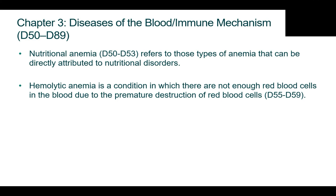First, let's look at anemia. Anemia is a condition that develops when your blood lacks enough healthy red blood cells. These cells are the main transporters of oxygen to the organs. If red blood cells are also deficient in hemoglobin, then your body isn't getting enough oxygen. Symptoms of anemia, like fatigue, can occur because organs aren't getting enough of what they need to function properly. Nutritional anemia refers to those types of anemias that can be directly attributed to nutritional disorders, and nutritional anemias are coded in the range of D50 through D53.